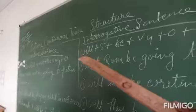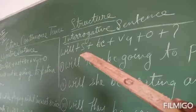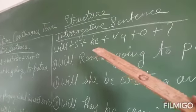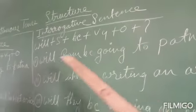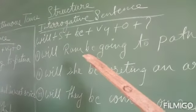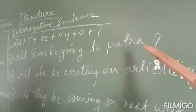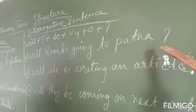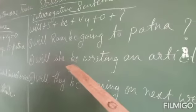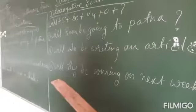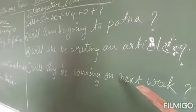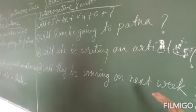The interrogative sentence structure of future continuous tense is: will plus subject plus be plus V4 plus object, followed by a question mark. For example: Will Ram be going to Patna? Will she be writing an article? Will they be coming next week?